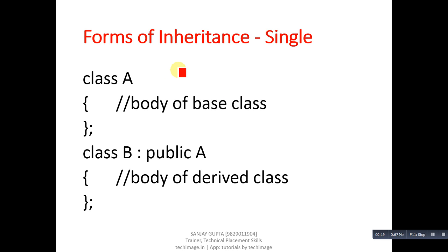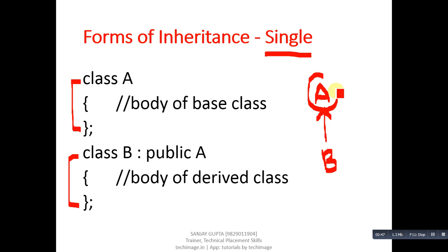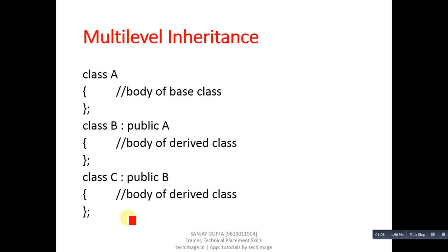There are total six types of inheritance available. The first is single inheritance. In this type, two classes are involved — one is the base class and another is the derived class. In this example, A class is the base class and B class is inheriting the features of A class. You can see in the diagram that A is the base class and its features are inherited by B class. In the main function you can create an object of B class to access members of both A and B class.